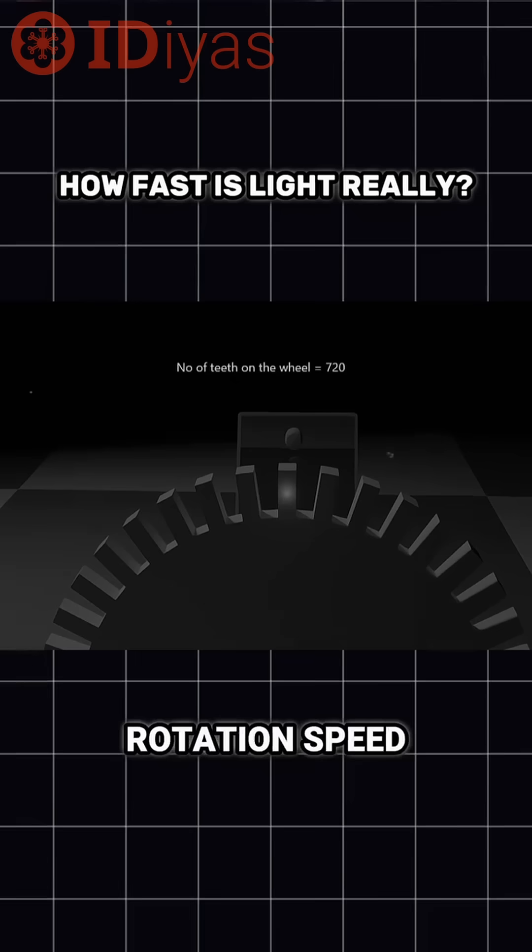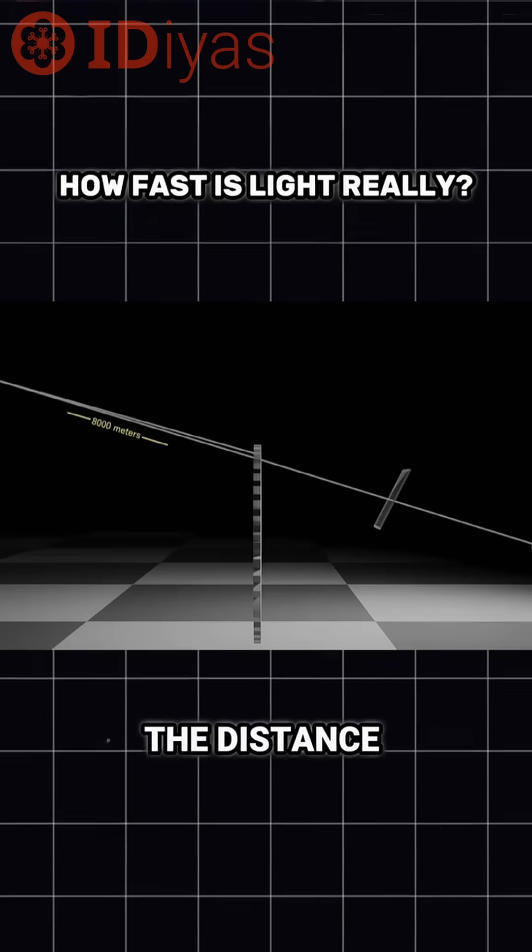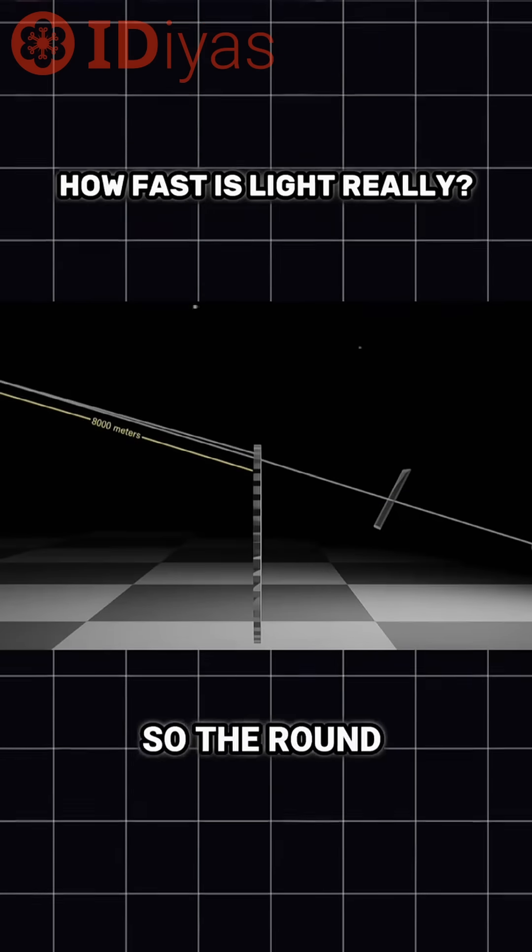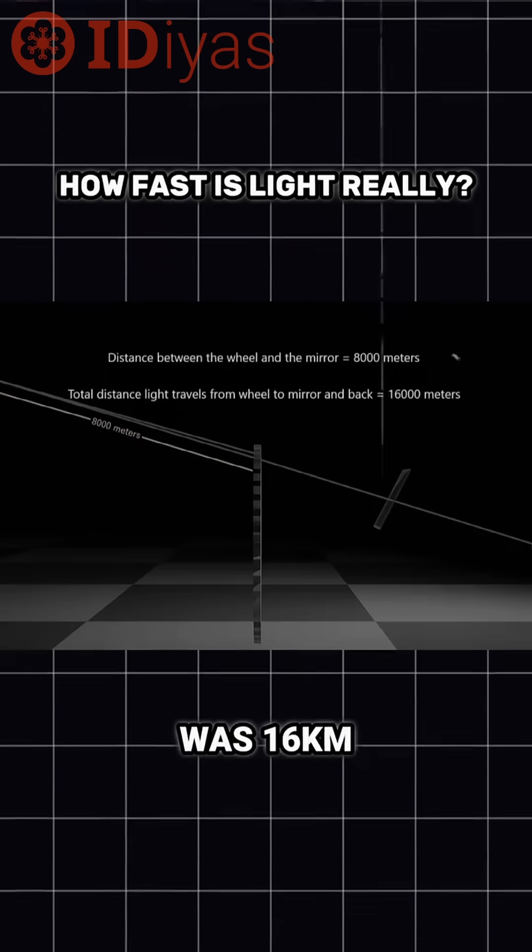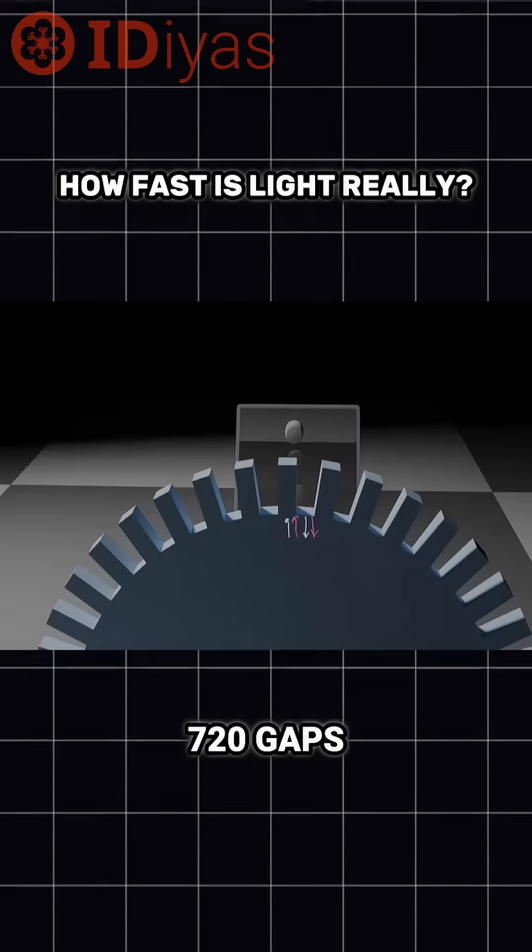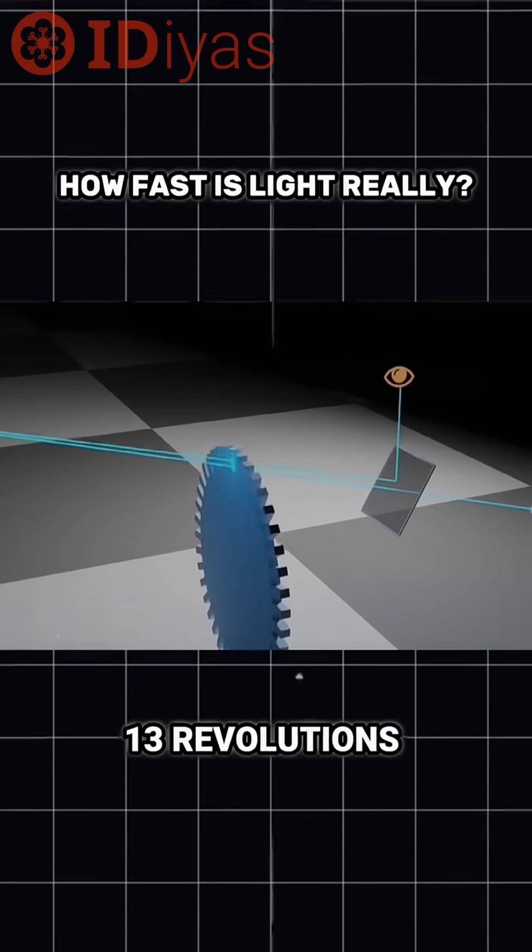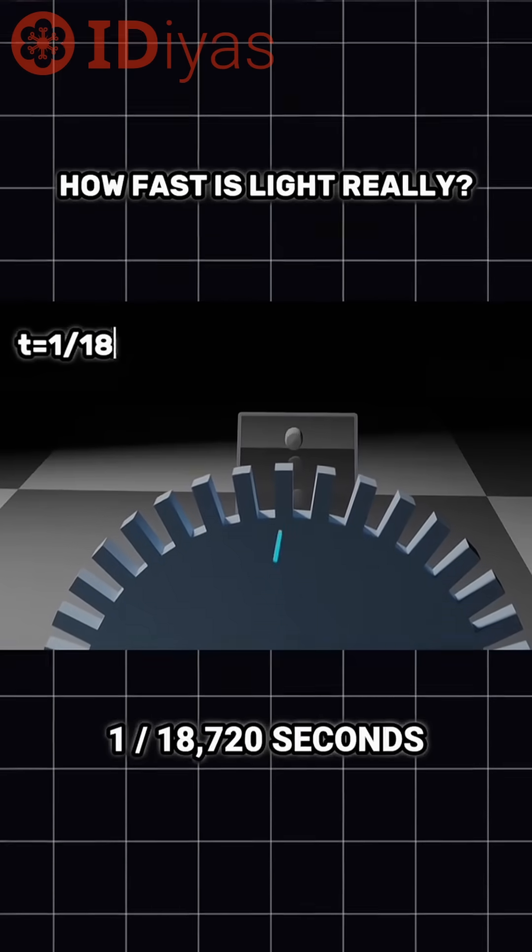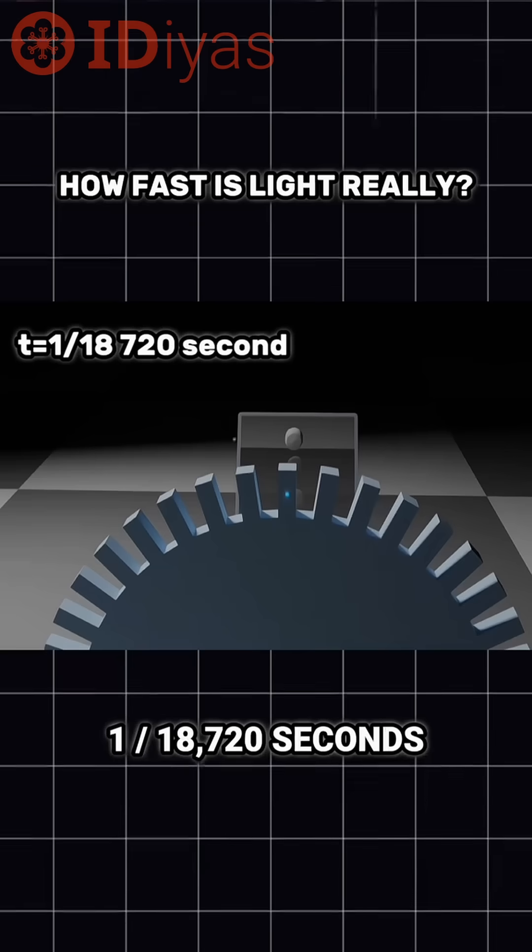Fizeau knew the wheel's rotation speed, how many teeth it had, and the distance to the mirror, 8 kilometers away. So the round-trip distance was 16 kilometers. The wheel had 720 teeth and 720 gaps, and spun at 13 revolutions per second. That means each gap lasted 1 divided by 18,720 seconds.